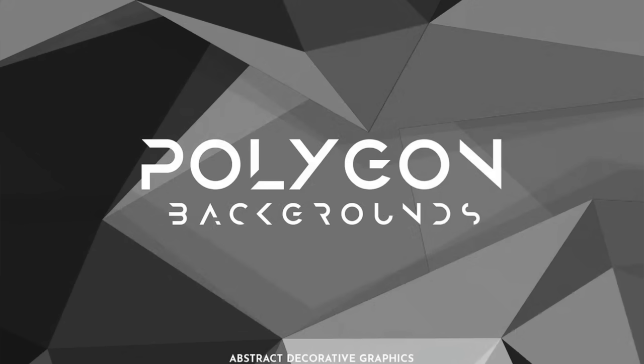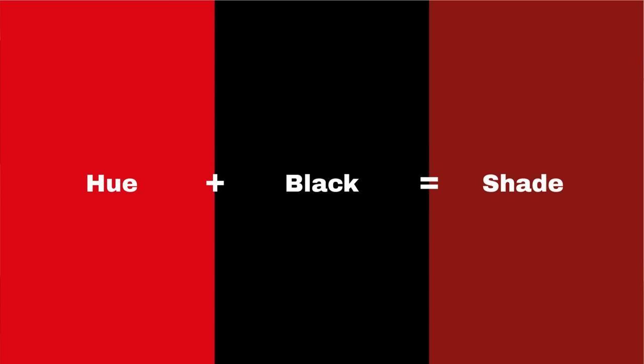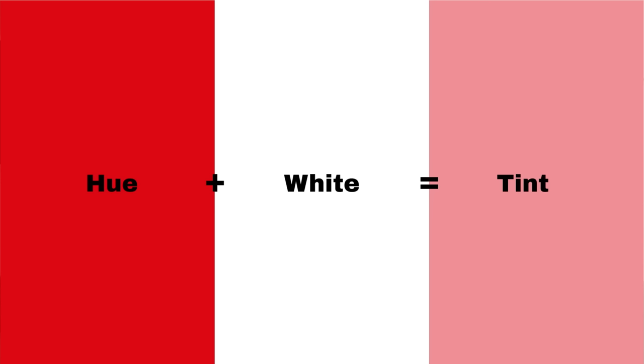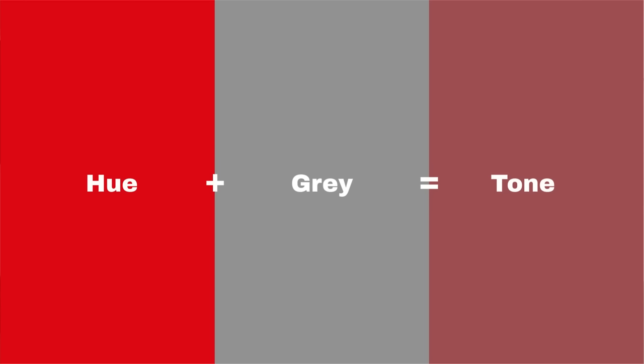We can see the high contrast between all of these colors — some have different values compared to darker or lighter colors like yellow. A shade is created by adding black to a hue to darken the color. Tint is created by adding white to make a color less intense, while tone is created by adding gray to a hue.